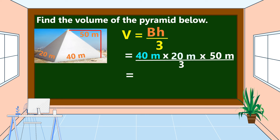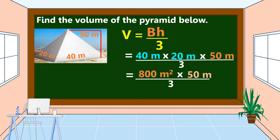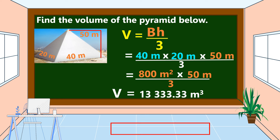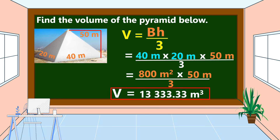Let's solve. 40 m × 20 m = 800 m². Then bring down × 50 meters, divided by 3. 800 m² × 50 m = 40,000 m³. Divided by 3, the volume of this pyramid is equal to 13,333.33 cubic meters, rounded to the nearest hundredths. Or 13,333 and one-third cubic meters.